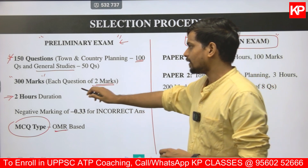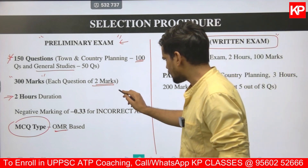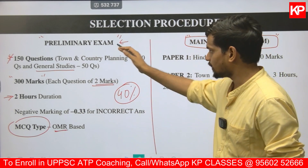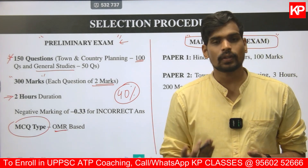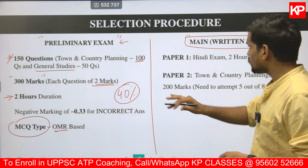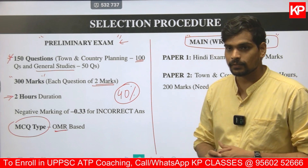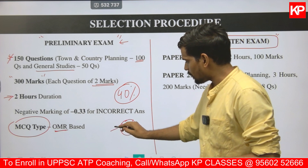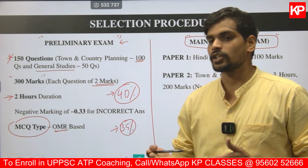Total of 150 questions, weightage of 300 marks. For the qualification threshold: the unreserved category requires a minimum of 40% to qualify the prelims examination. All students scoring more than 40% will be published in the merit list and become eligible for the mains examination. For the reserved category — SC and ST — the selection criteria is 35%.